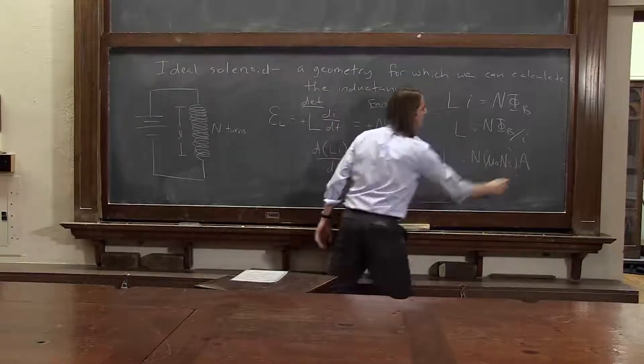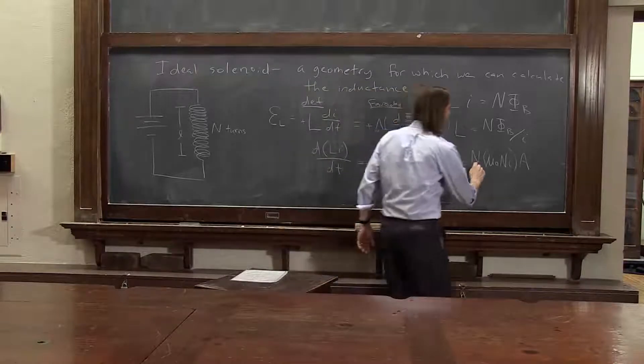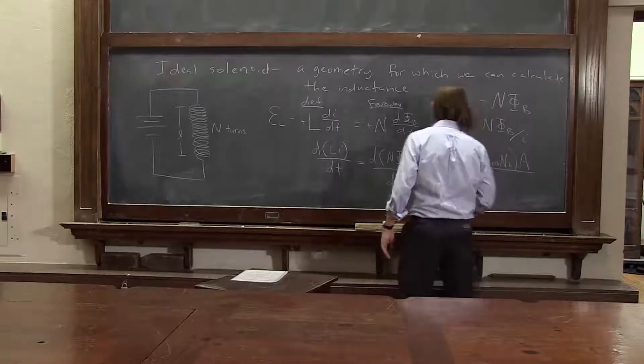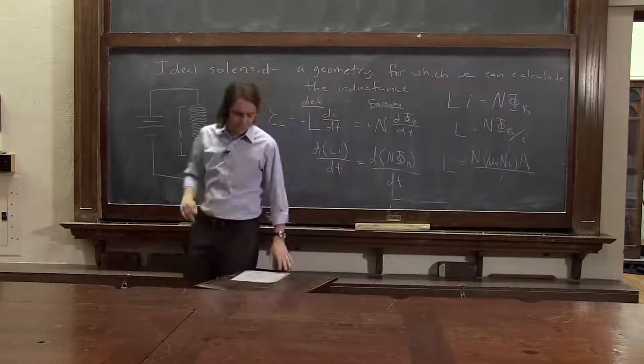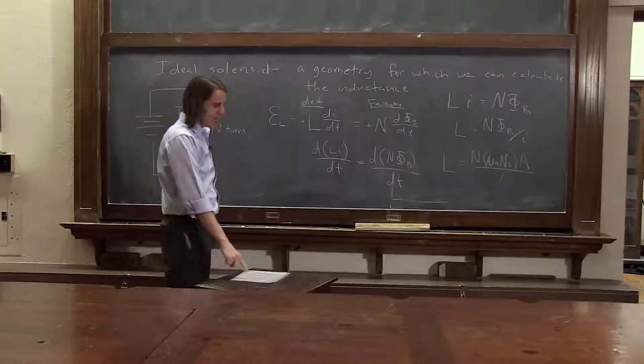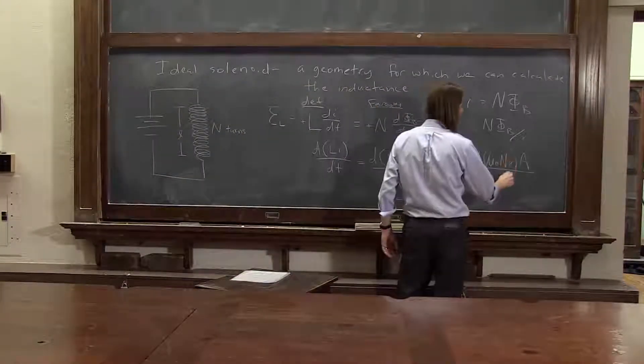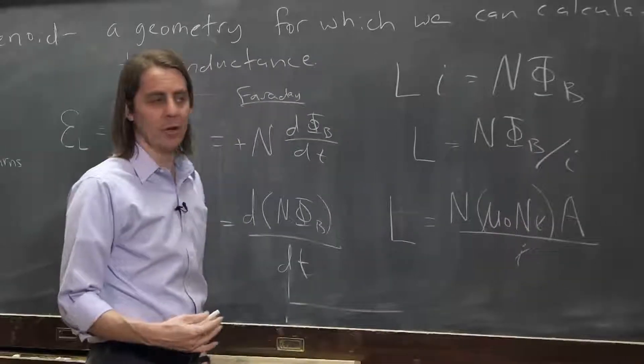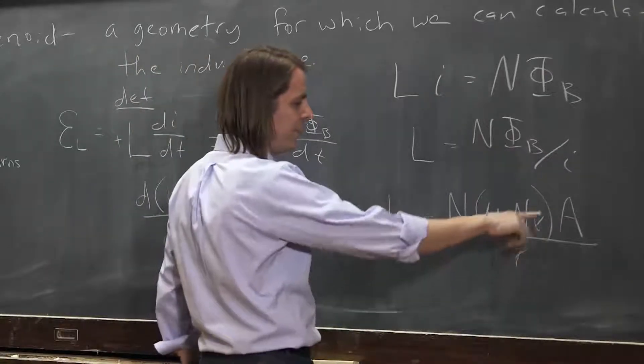So there's n, B, times A. And that's over i. And we put all that together, then what's going to happen? Let's see. So the i's go away. That's good. The inductance shouldn't depend on the actual current. It should be a constant for the device.